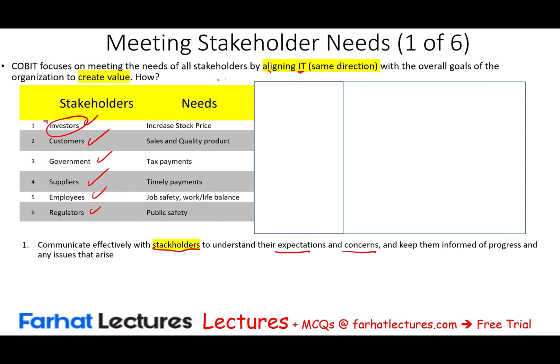Each stakeholder group will have different needs — explicit or implicit. The shareholders and investors want to drive the stock price up and create more value. Customers want available, quality products. The government wants their tax payment. Suppliers want timely payment. Employees want job safety, job security, and work-life balance.